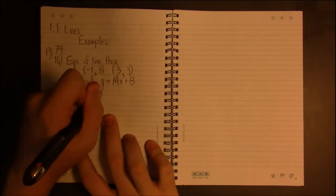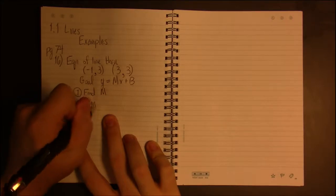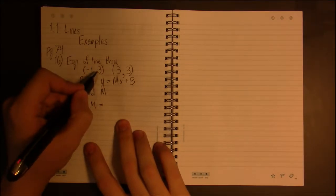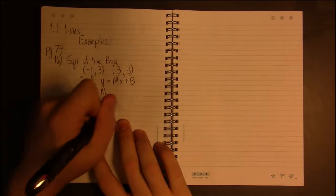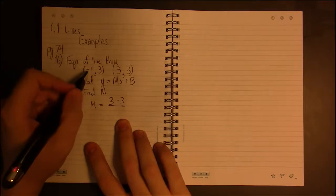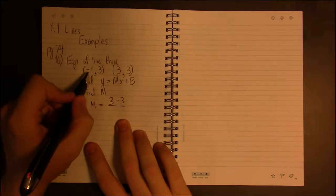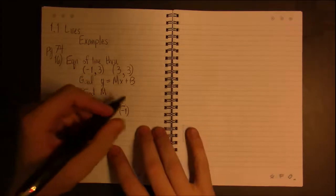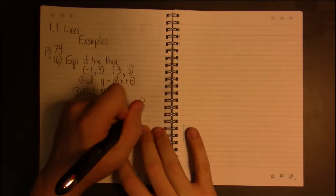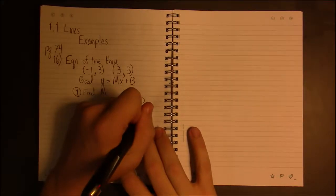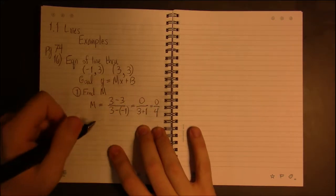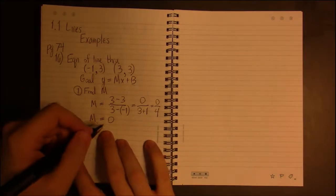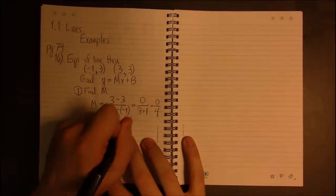So we find M and we do that by taking the difference in Y's - how far we have to travel to get from 3 to 3, well that's a distance of 0 - divided by the movement from -1 to 3. So 3 minus (-1), so this is 0 over 3 plus 1, 0 over 4.